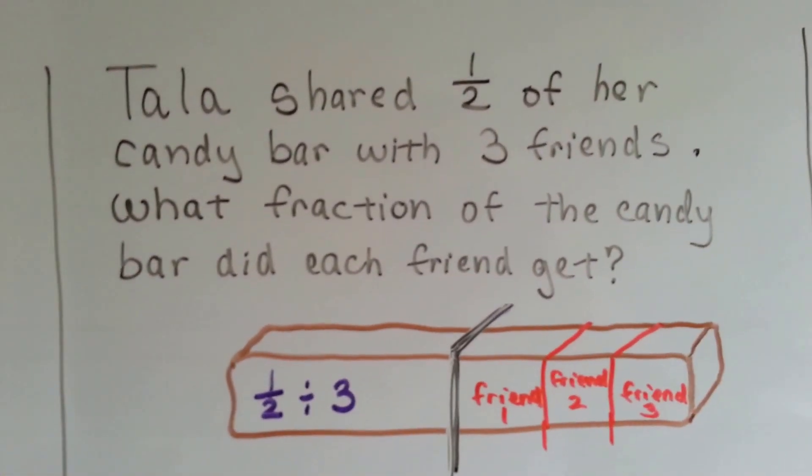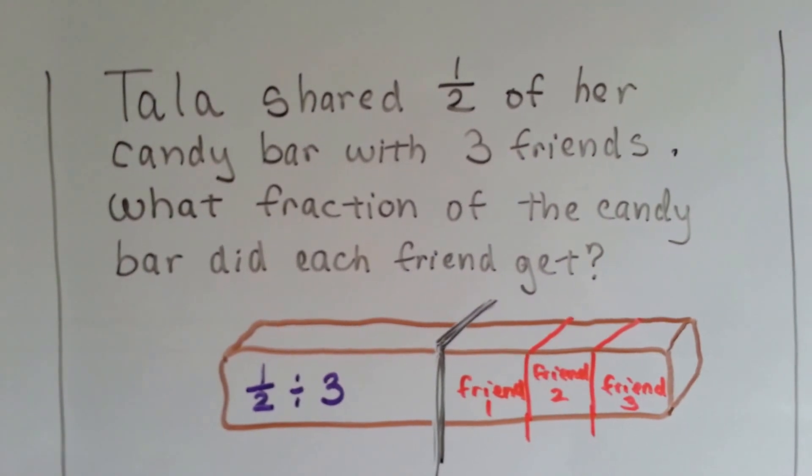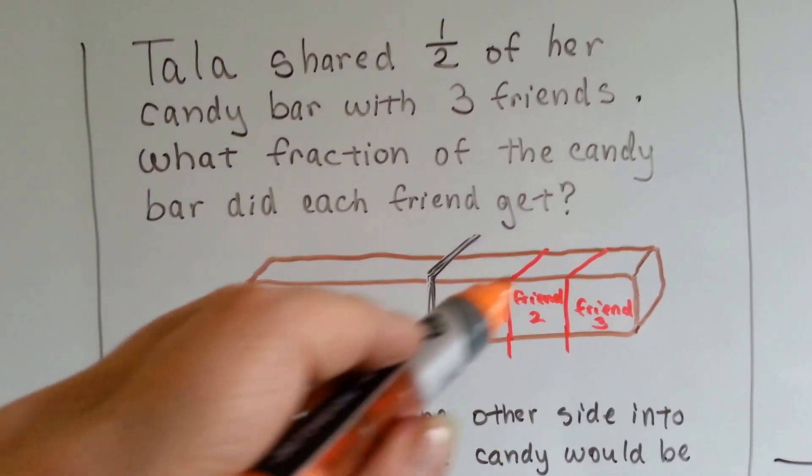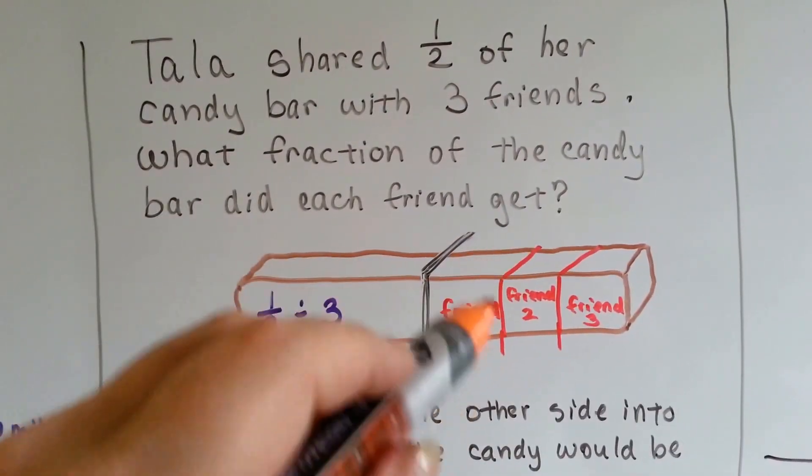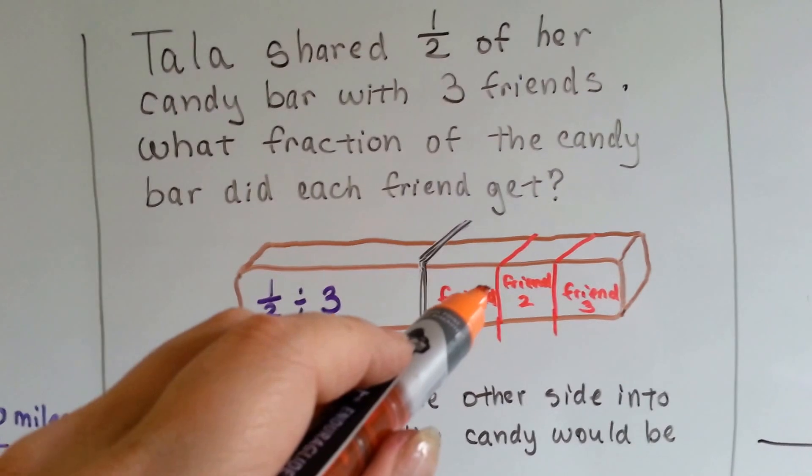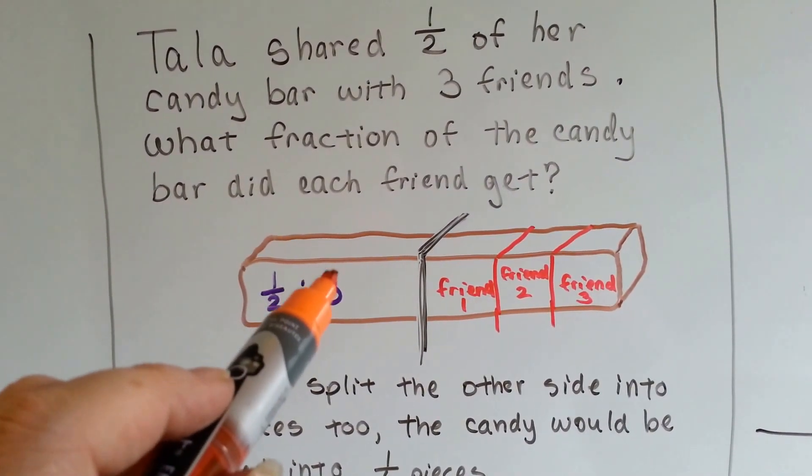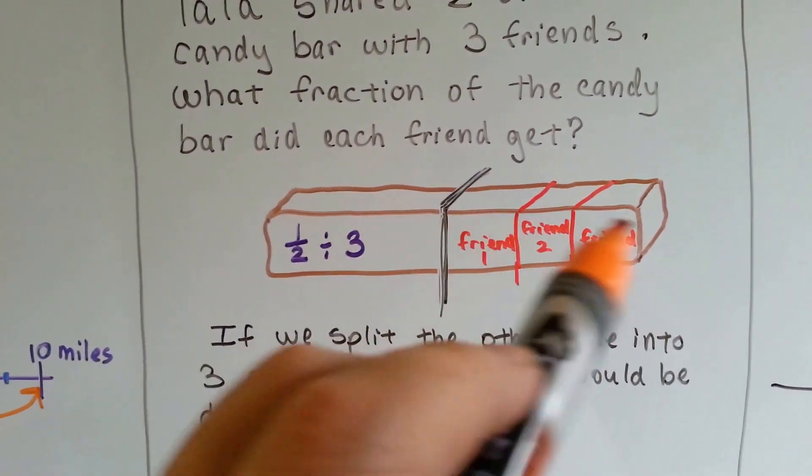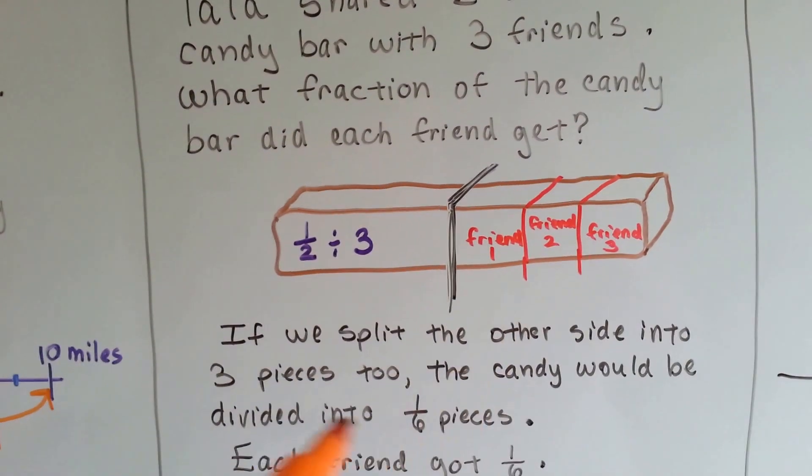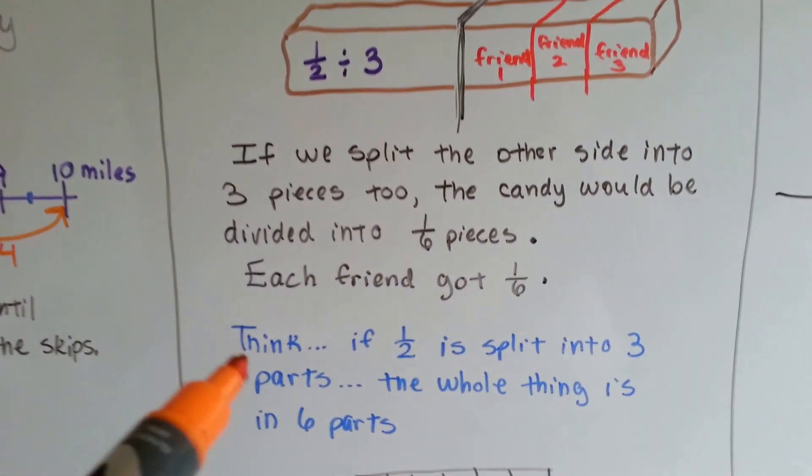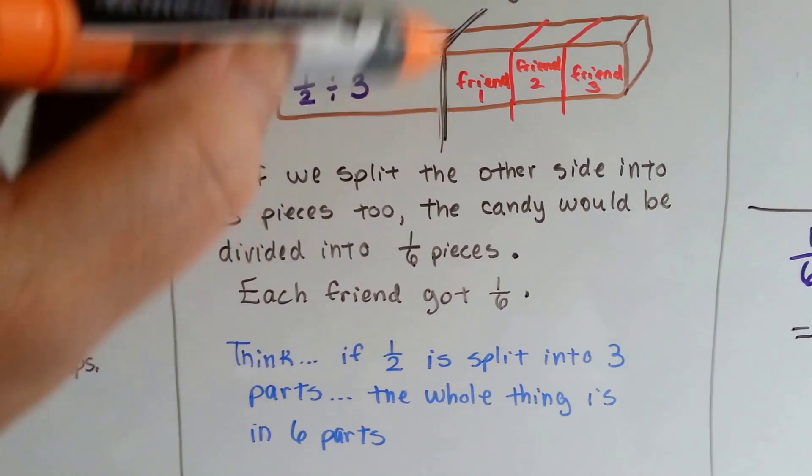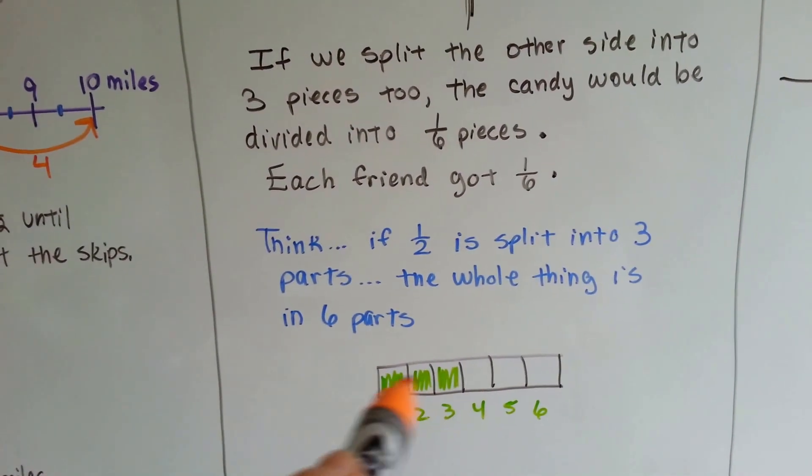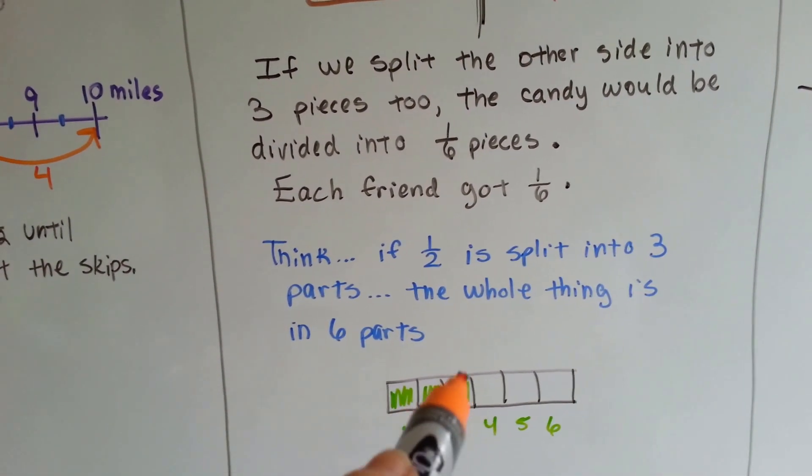Tala shared half of her candy bar with 3 friends. What fraction of the candy bar did each friend get? Well, we cut the candy bar in half, and this is the part she shared with the 3 friends. If we split this into 3 parts, we can see that this side should have been split into 3 parts too. That means there would have been 6 parts. If there's 6 parts and each friend got 1 of them, they each got 1/6. So think, if half of it is split into 3, then the whole thing is 6 parts. They each got 1/6, which was half of it.